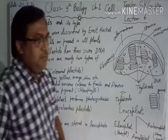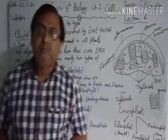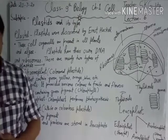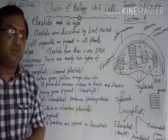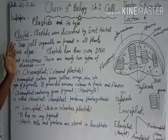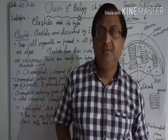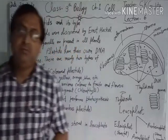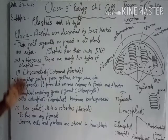A plastid is a double membrane-bounded organelle present in plants as well as in algae. Plastids were discovered by Ernest Haeckel. There are mainly two types of plastids: chromoplasts and leucoplasts.